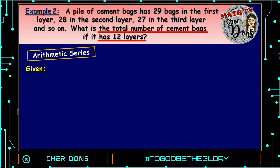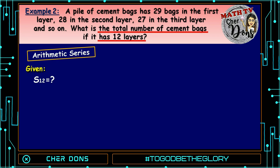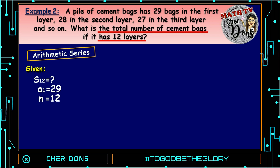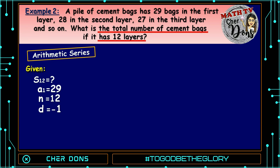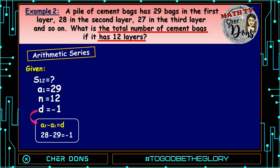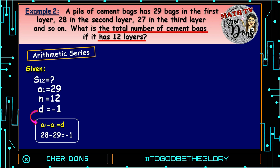Given: we're looking for S sub 12. A sub 1 is 29, n is 12, and d is equal to negative 1. To get the common difference, subtract the value of the second term from the first term: A sub 2 minus A sub 1, so 28 minus 29 equals negative 1.